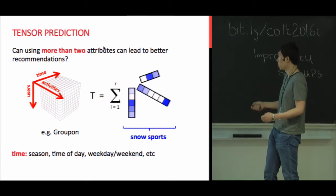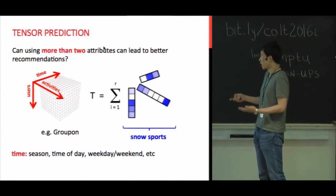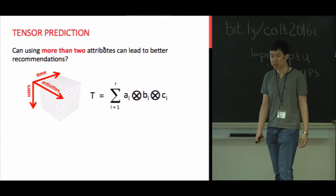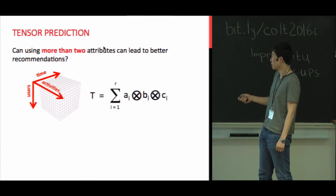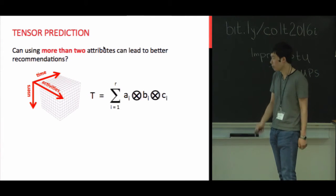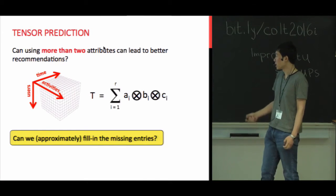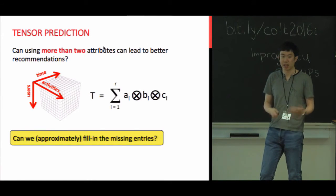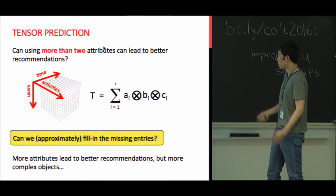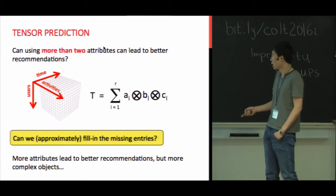The total number of activity types is called the rank of the tensor. We abstract the problem as: we have an unknown tensor T with a rank-R decomposition, T = sum of a_i ⊗ b_i ⊗ c_i, where a_i is for users, b_i for activities, and c_i for the time axis. We then try to answer a problem similar to matrix completion: if users have given reviews of activities at specific times, can we approximately fill in the missing entries? The hope is that adding this attribute leads to better recommendations, though the optimization problem is more complex.